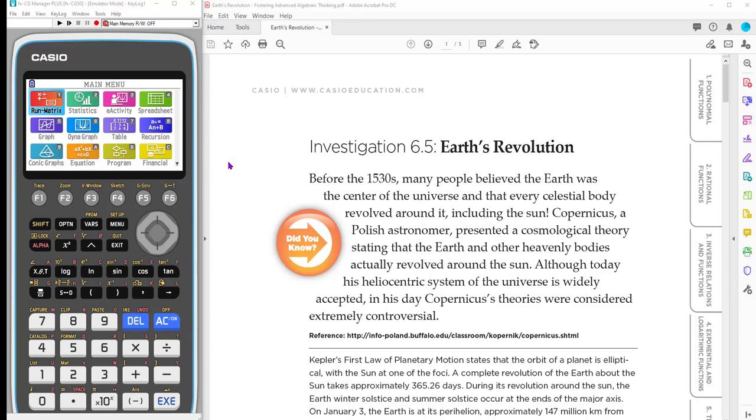Hi there. So today I'm working with the FXCG50 Casio graphing calculator. It's our color graphing calculator. And I am going to be showing you two things: how to enter numbers in scientific notation, both just to use them in calculations, but also how you can use them to set up a scale for an axis.